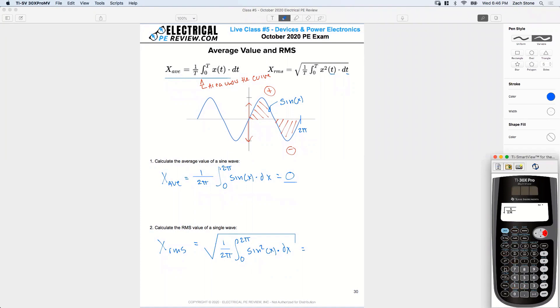1 over 2 pi, my period. Here's my integral. 0 to 2 pi. And now I've got to square that sine. So I've got sine of X. I'm going to close the parentheses and I'm going to square it.